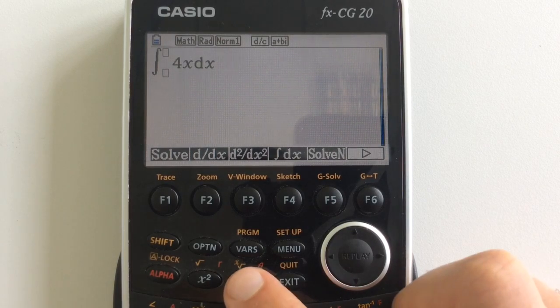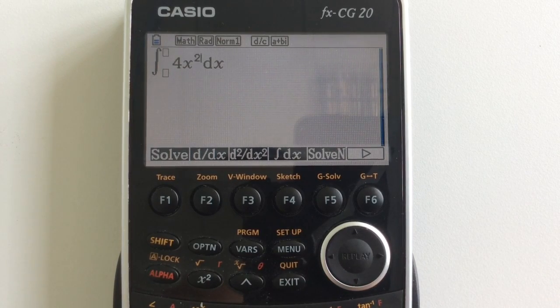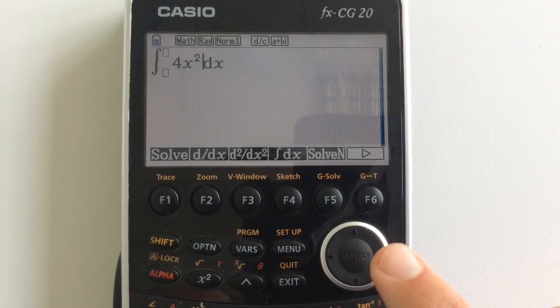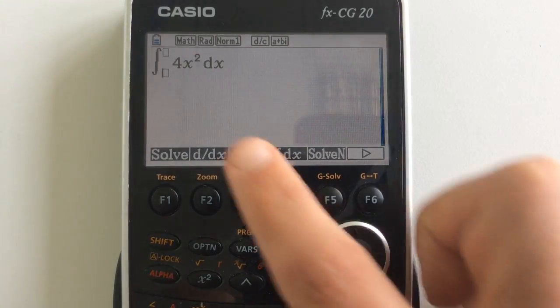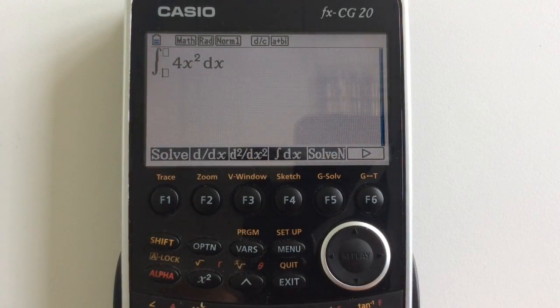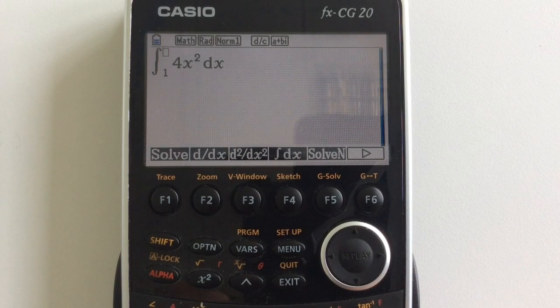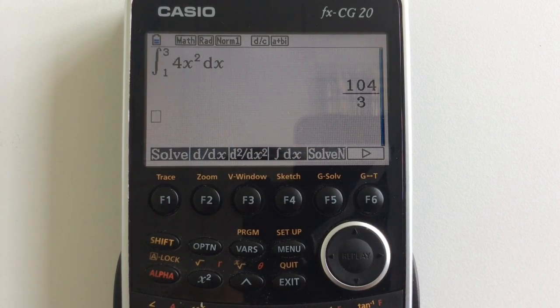So let's have 4x to the power of 2. Pressing right, and right again, we can then specify what our limits are going to be. Let's go from 1 to 3, pressing enter, and there's our solution.